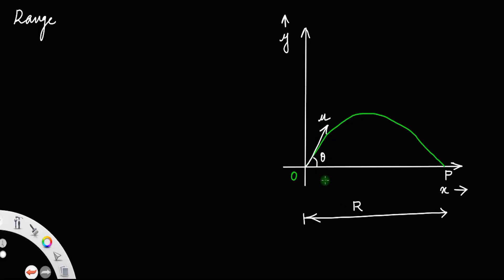Now, how will we find the expression for the range of the projectile? First, resolve the initial velocity u along the x-axis and along the y-axis. On resolving u, you get u cos theta along the x-axis and u sin theta along the y-axis.